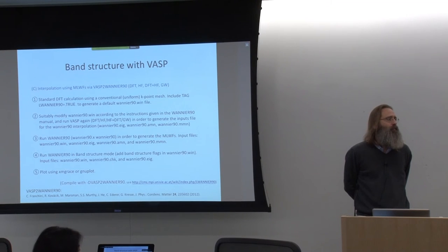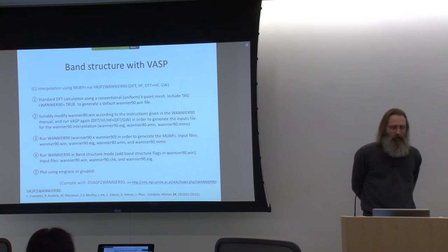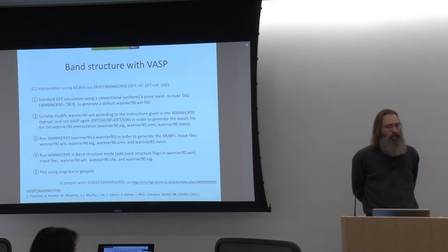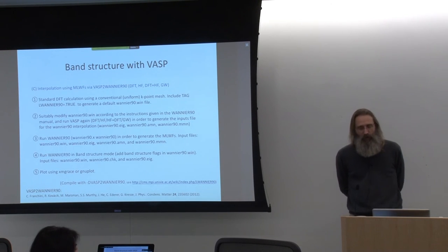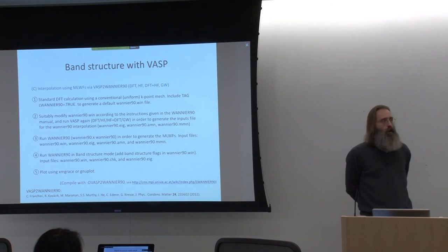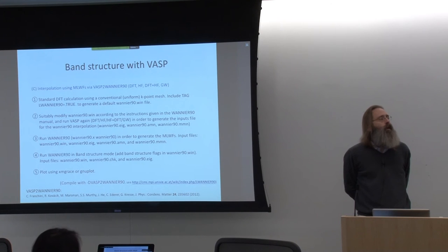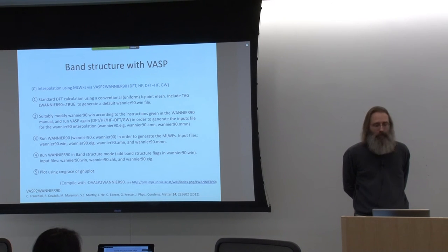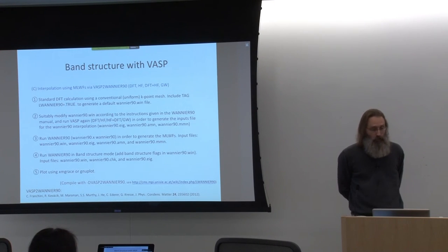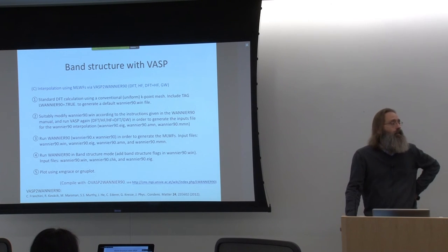Is it crazy to attempt an MP2 calculation instead of simple HF for the exchange energy while not degrading the correlation description? Well, you would have to do both — you would do MP2 on top of Hartree-Fock. MP2 gives you part of the correlation energy. I'm not sure how you would use MP2 to compute the exchange energy specifically, but you would add MP2 on top of Hartree-Fock to get part of the correlation energy.